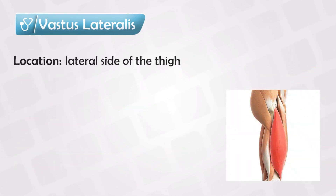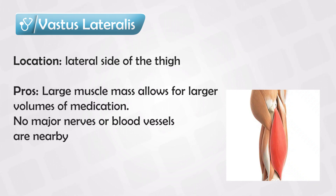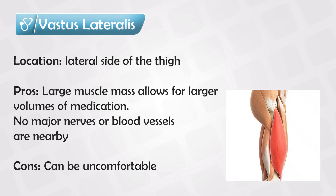And then we have the vastus lateralis, which is located in the lateral side of the thigh. It's a rather large muscle, and once you inject the medication, make sure that you hit the largest bulk of the muscle. This large muscle can take a larger volume of medications, and it doesn't have any important neurovascular structures underneath it. So there is little risk of complication, but it can be uncomfortable for the patient.